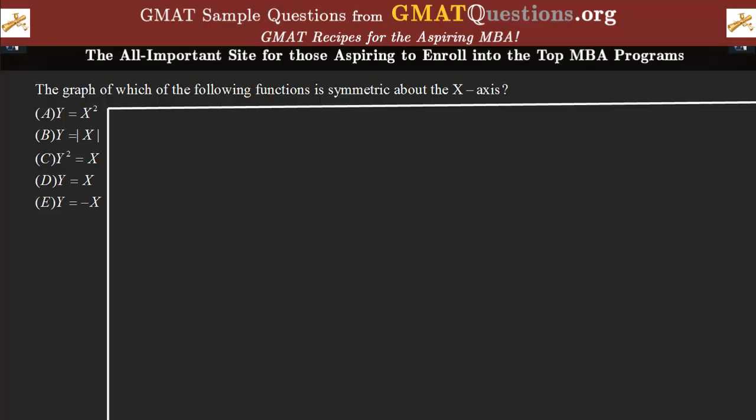Let's read the question: The graph of which of the following functions is symmetric about the x-axis? We're given the choices: y equals x-squared, y equals absolute value of x, y-squared equals x, y equal to x, and finally y equal to negative x.